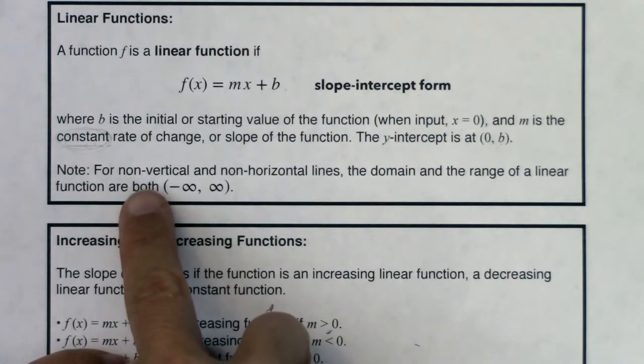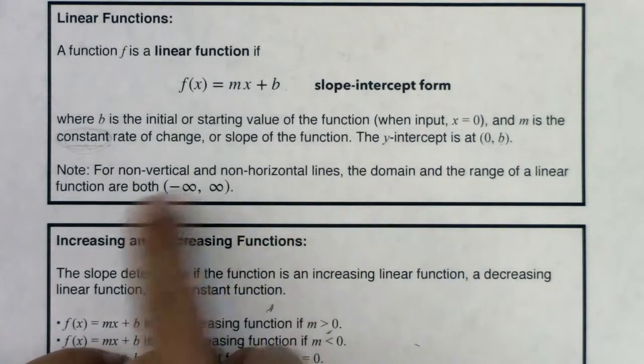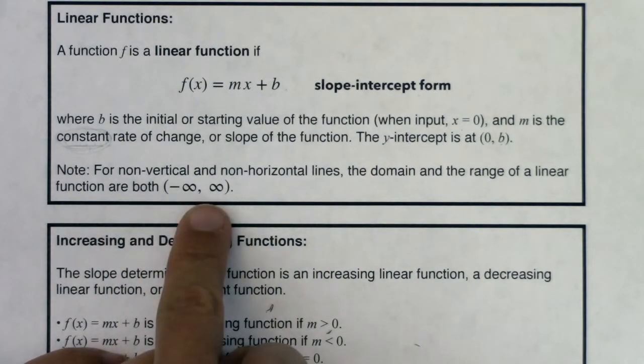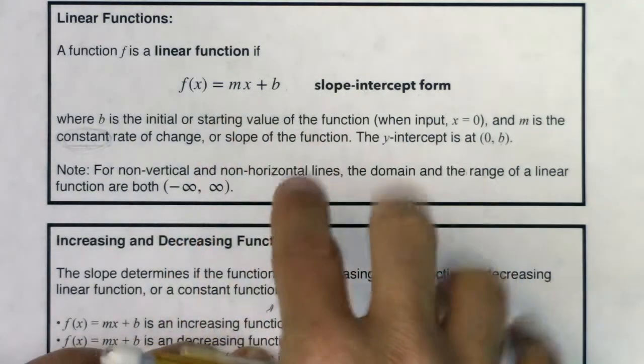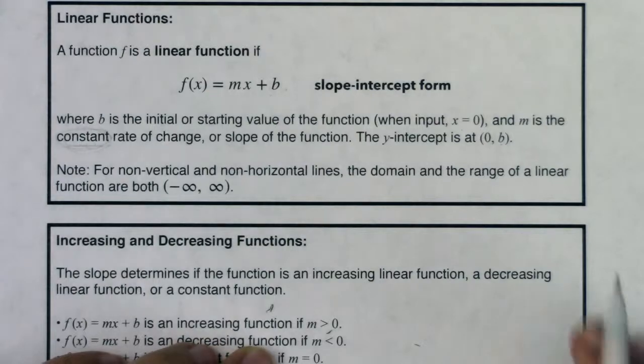And we've mentioned this note before. For non-vertical and non-horizontal lines, the domain and range of the linear functions are both all real numbers. Now, when you have a horizontal or a vertical line, this changes a little bit.